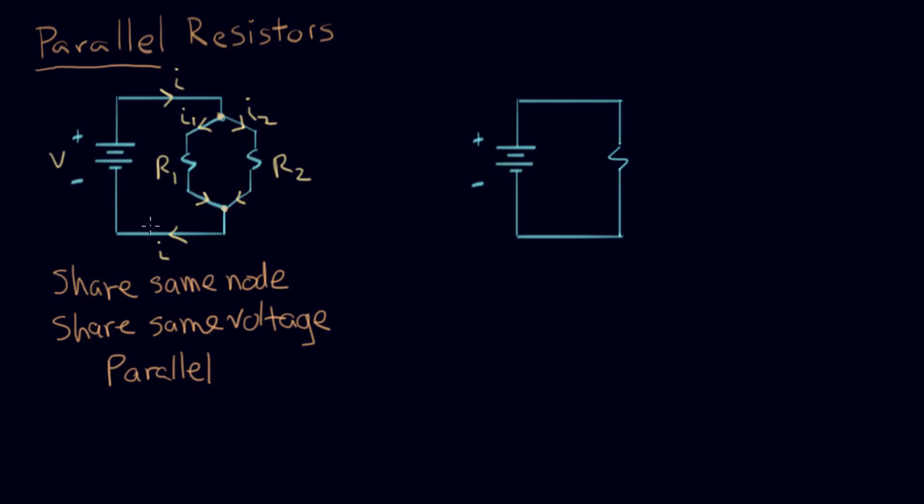Now what I want to do is replace these two resistors with an equivalent resistor, one that does the same thing. By the same thing we mean causes the same current to flow in the main branch. And so that's what's drawn over here. Here's a resistor. We'll call this V again, and we'll call this R parallel.